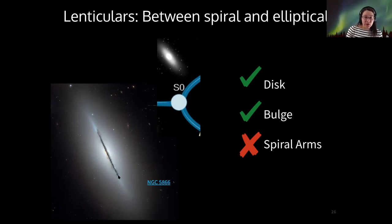They do have a disk. So this is an example. And what I mean by a disk is they are relatively flat like a spiral galaxy. They also do have a bulge, which is a feature of the spiral galaxy, but they do not have spiral arms. So this is kind of an in-between galaxy.